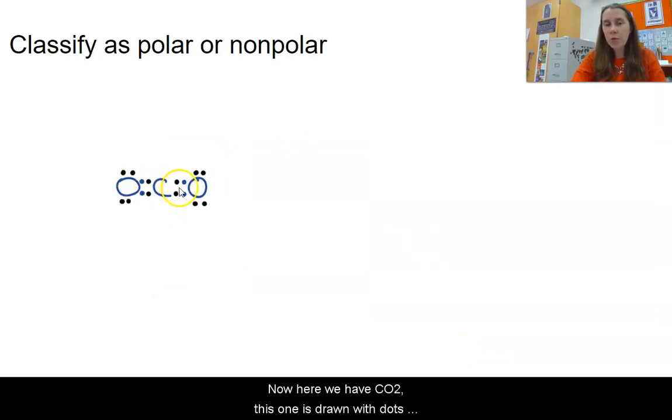Now here we have CO2. This one is drawn with dots instead of lines for the bonds. Oxygen, again, is going to be more electronegative than the carbon because it's closer to that fluorine.